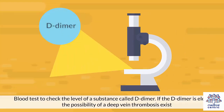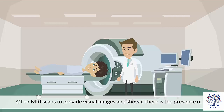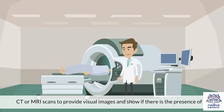A blood test can check the level of a substance called D-dimer. If the D-dimer is elevated, the possibility of a deep vein thrombosis exists. CT or MRI scans can provide visual images and show if there is the presence of a clot.